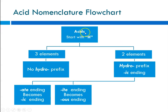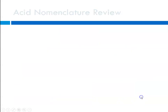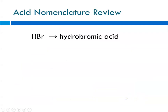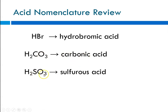The flowchart for naming acids: acids always start with H in their formula. If there are only two elements, use the 'hydro-blank-ic acid' pattern. If there are three elements, there is no 'hydro' prefix. If the anion ended in '-ate,' make the '-ic acid'; if it ended in '-ite,' make the '-ous acid.' Examples: hydrobro-mic acid (binary), carbonic acid (from carbonate ion), and sulfurous acid (from sulfite anion).